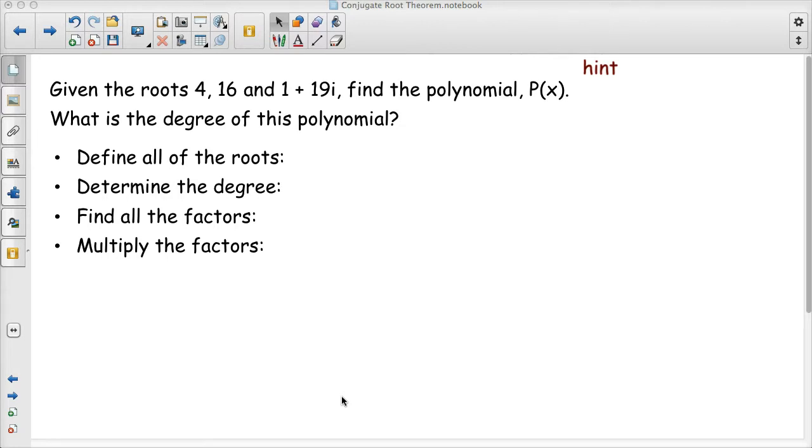one of my roots is a complex root, and I know from the conjugate root theorem that if I have a complex root, it has to come in a conjugate pair. In other words, if 1 plus 19i is a root, then so is 1 minus 19i. That means that I actually have four roots for my polynomial, so my polynomial has a degree of 4.